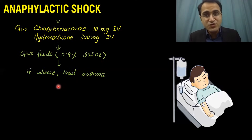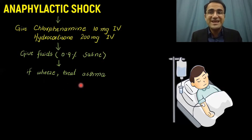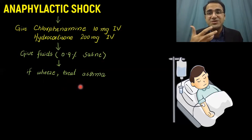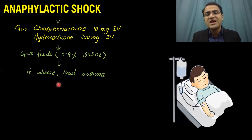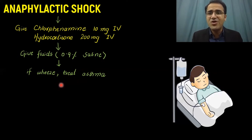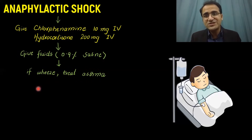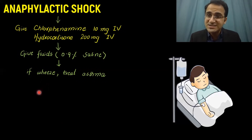If there is wheeze and you suspect that the patient has developed asthma due to an allergic reaction to a certain allergen, treat asthma accordingly. For the treatment of asthma, give a short-acting beta agonist — salbutamol or albuterol.